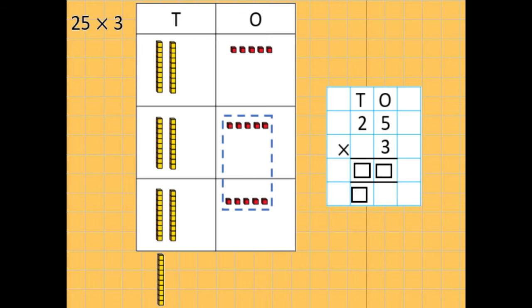Using that knowledge, give this a go, 25 times 3. If you want to use the representation to help you, that's fine. I'd like you to give it a go of column multiplication as well. Pause and come back when you're ready. All right, we have 5 times 3, so 5, 10, 15. So I'm going to put my 5 in the ones column and exchange that extra 10 for 1 ten into the next column. 3 times 2, so 3, 6. But I also know I must add this 1. So it becomes 25 times 3 is 75.